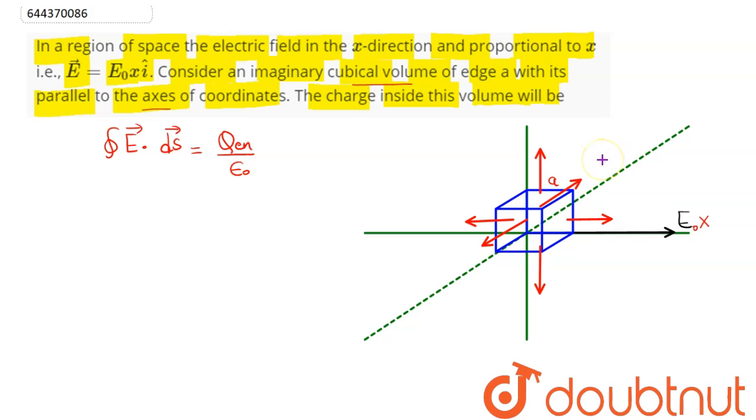All the other areas along y axis, minus y axis, z axis and minus z axis make an angle of 90 degrees with the electric field. So E.ds part becomes 0 as E.ds cos 90 equals 0.